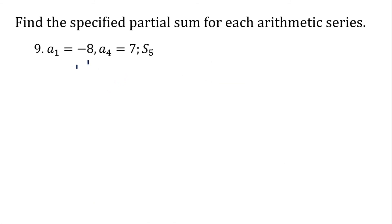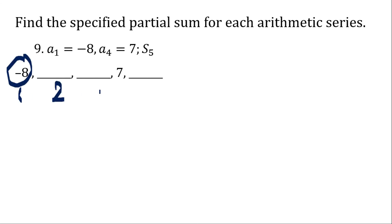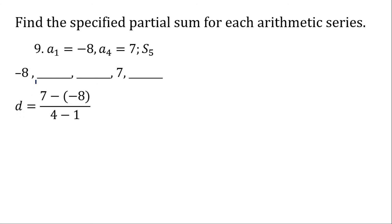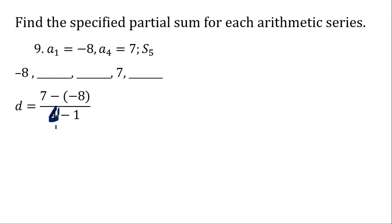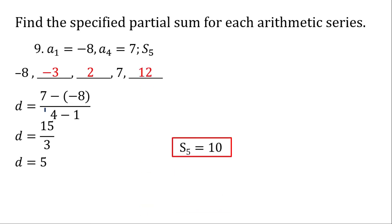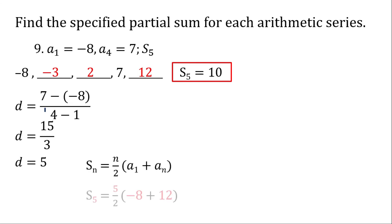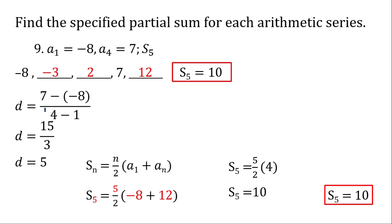For number 9, a similar kind of problem. We have first, second, third, and fourth terms. The fourth term is 7 and the first term is negative 8. To find common difference: last term minus first term over n minus 1 — 7 minus negative 8 is 15, and 4 minus 1 is 3, so d equals 5. Then: negative 8 plus 5 is negative 3, plus 5 is 2, plus 5 is 7, plus 5 is 12. Adding them gives a sum of 10; or use the formula and get the same answer of 10.